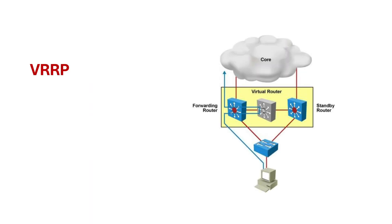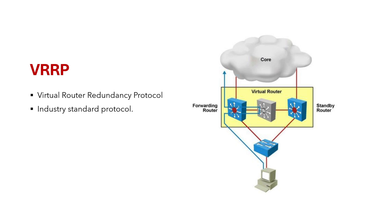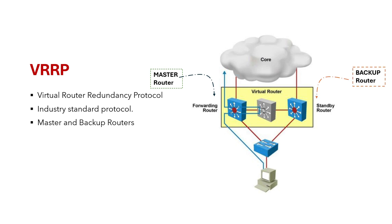The next protocol we'll discuss is VRRP. VRRP is an industry standard protocol used to provide redundancy and high availability in IP networks. By industry standard I mean it will work on all vendors. It is similar to HSRP but with key differences: the router that currently handles all the traffic for the virtual router is called the master router, and the router that takes over if the master router fails is called the backup router.